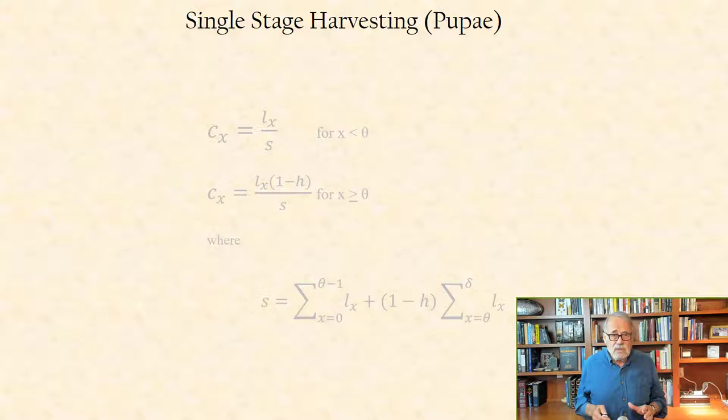The associated stationary age distribution for the population is given by the following expressions for the fraction of the population at age X, denoted CX.